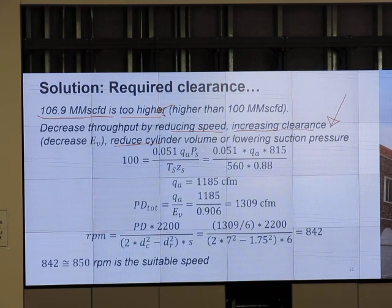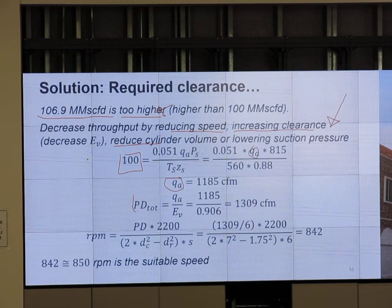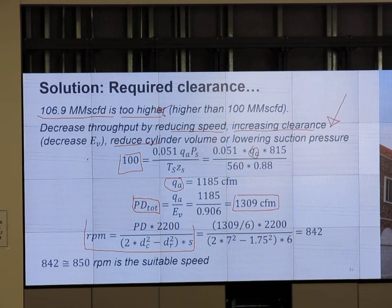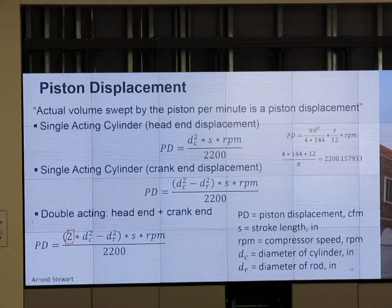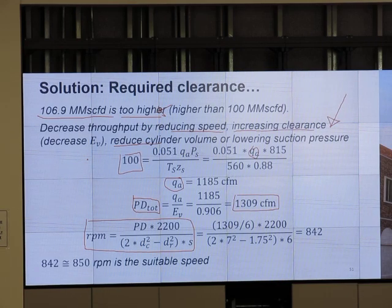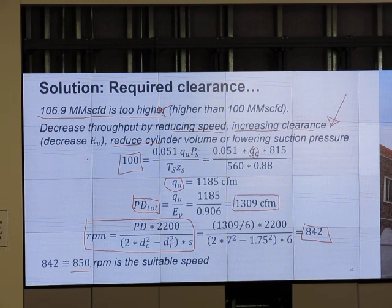If we decrease RPM, what I do is instead of put 106.9, I put 100 and try to calculate QA. From QA I back calculate the total piston displacement. From my total piston displacement, I have an equation on piston displacement and RPM. For double acting, that's the relationship between piston displacement and RPM. I can have a little less RPM instead of 900, I can have just about 850 RPM and I will deliver that much.